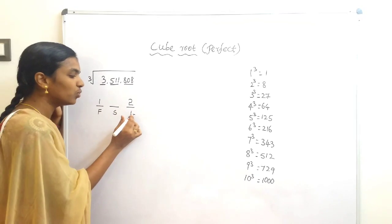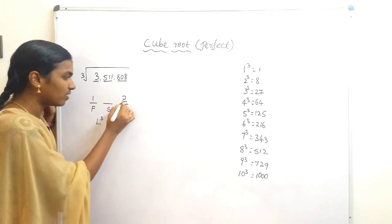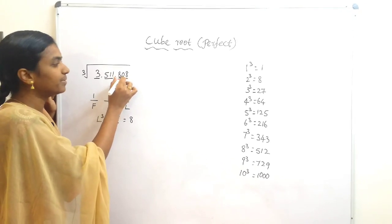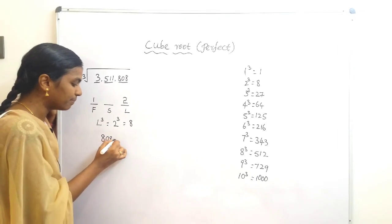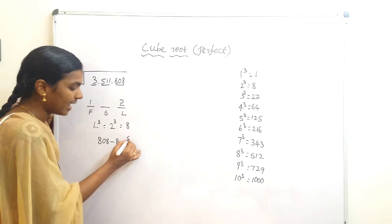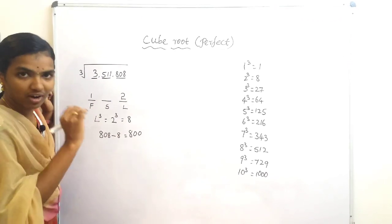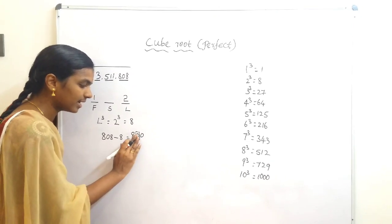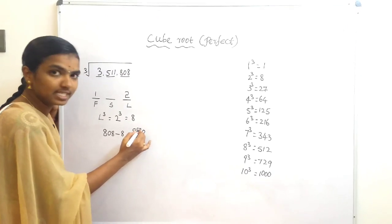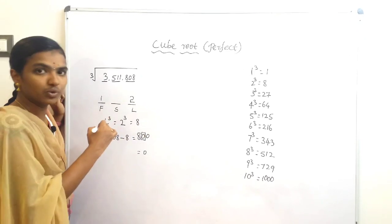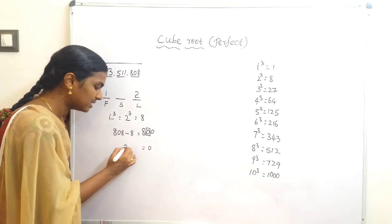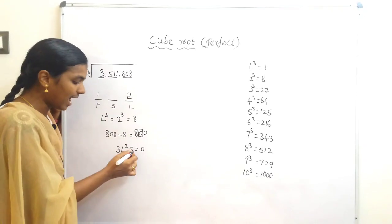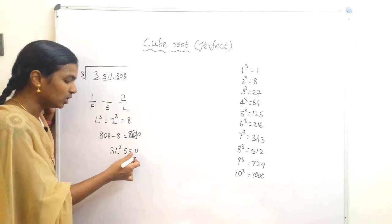To find the second digit, first cube the last digit: L³ = 2³ = 8. Subtract from the last three digits: 808 − 8 = 800. We take only the middle digit of 800, which is 0. Now apply the formula: 3 × L² × S = middle digit. So 3 × 2² × S = 0, giving 3 × 4 × S = 0, so 12 × S = 0.